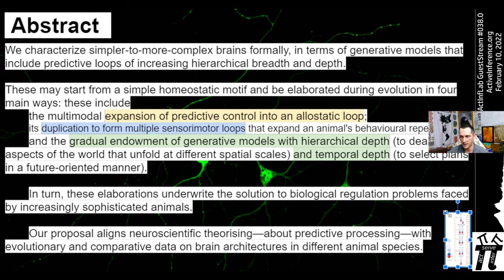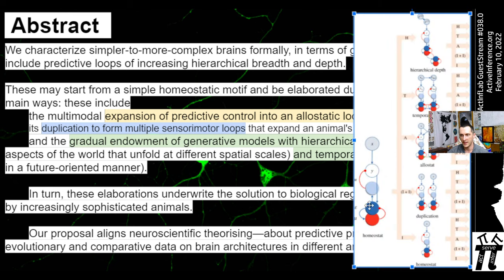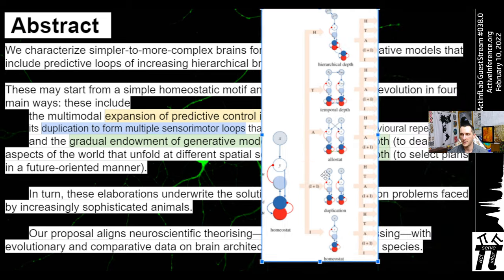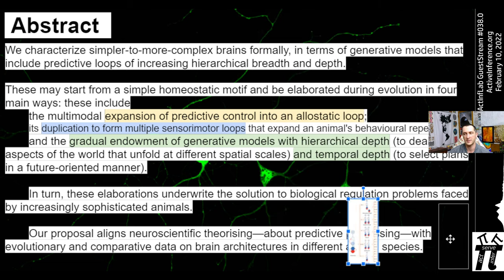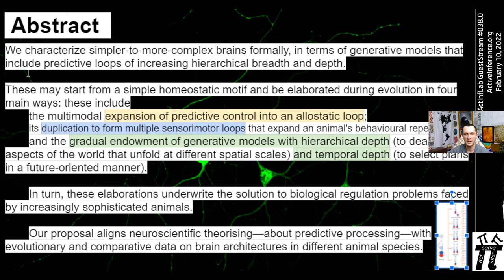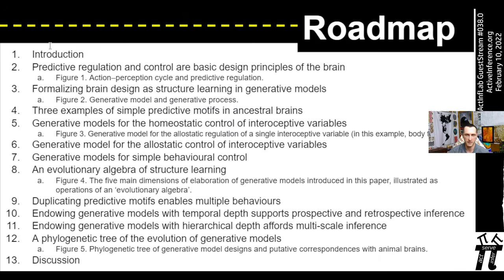Looking ahead at a key figure: here's the ancestral state with its structure — it's a model — and then it undergoes a set of discrete operations that change it structurally. That's structure learning happening over evolutionary timescales, tied to functional architectures for predictive processing.